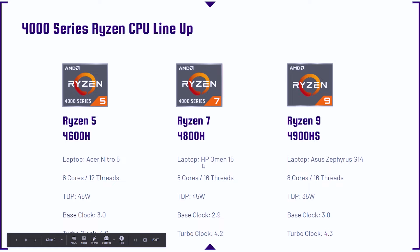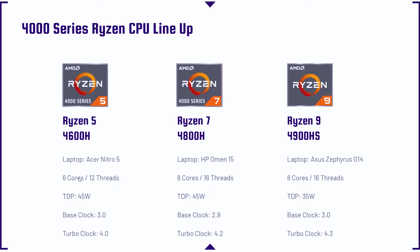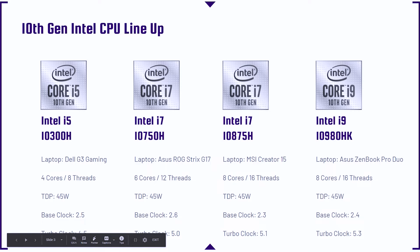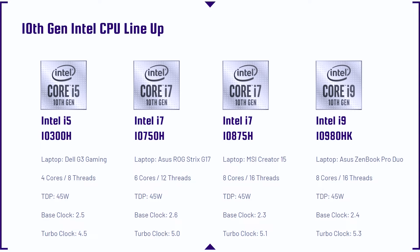These are the laptops that these processors were featured in. We have the Ryzen 5 4600H with six cores and 12 threads, the Ryzen 7 4800H with eight cores and 16 threads, and the Ryzen 9 4900HS with eight cores and 16 threads. Note the S — that means it's going to be a little less powerful than the full Ryzen 9 4900H. For Intel 10th gen, we have the i5-10300H, the i7-10750H, the i7-10875H, and the i9-10980HK, with their respective cores, threads, clock speed, and turbo clock.